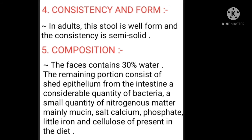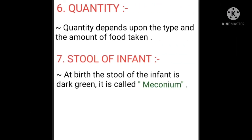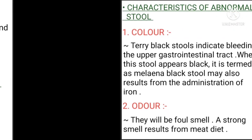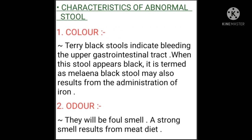The feces contains 30% water. The remaining portion consists of shed epithelium from the intestine, a considerable quantity of bacteria, a small quantity of nitrogenous matter, mainly calcium salts, calcium phosphate, and a little iron. Cellulose is present in the diet. Quantity depends on the type and amount of food taken. At birth, the stool of an infant is dark green and is called meconium.